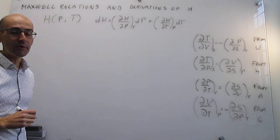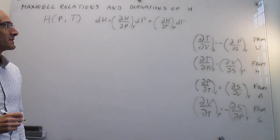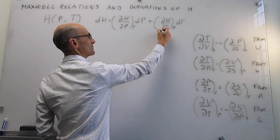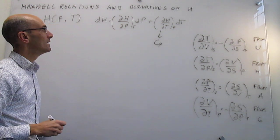In prior work we have already seen the meaning of these partial derivatives. This one is well known—it's simply the heat capacity at constant pressure, Cp.